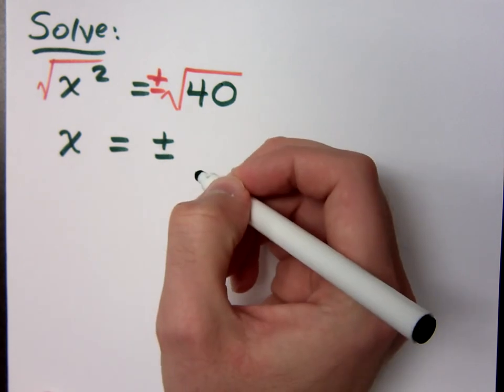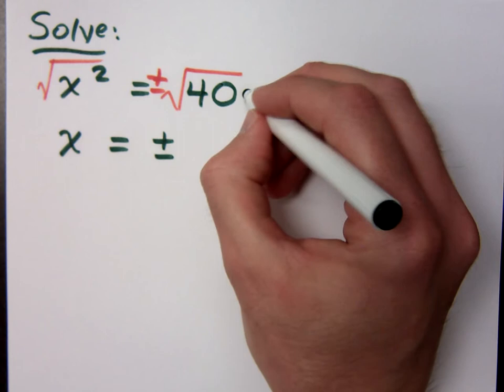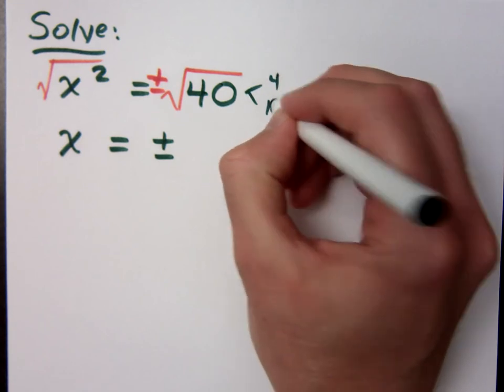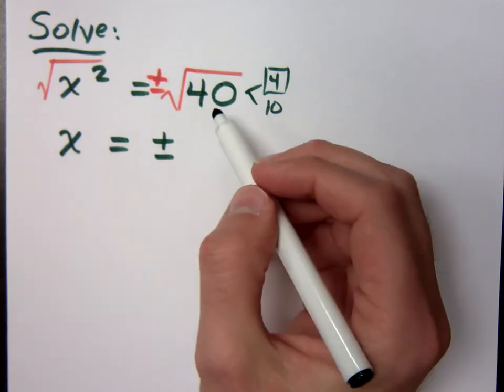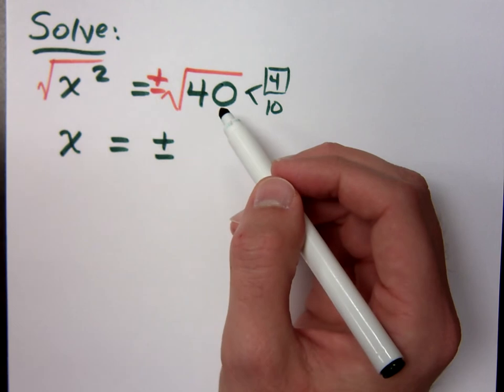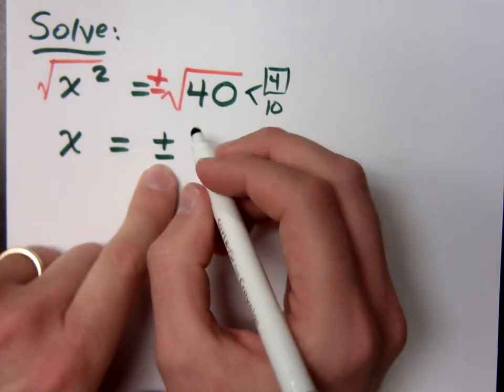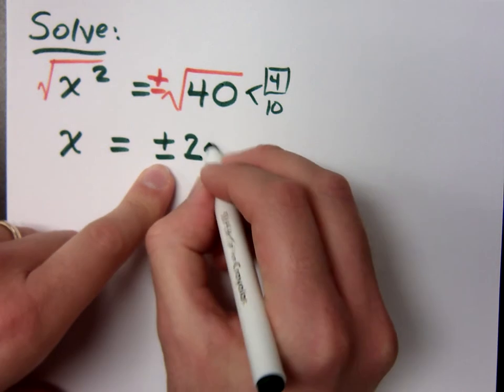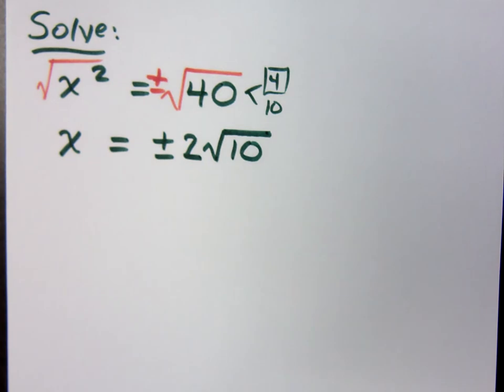So, x equals plus or minus. How does the square root of 40 break down? It breaks down as 4 times 10. This is your perfect square. Be careful. This plus or minus was for the square root, right? That means anything that comes outside of the square root is also being affected by this plus or minus. So, that's going to be 2 square roots of 10. So, plus or minus 2 square roots of 10.